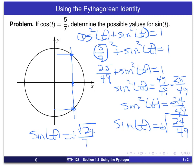Now, that result for sine of t is considered the exact value for sine of t. It involves no approximations whatsoever. The square root of 24 is a perfectly legitimate real number.